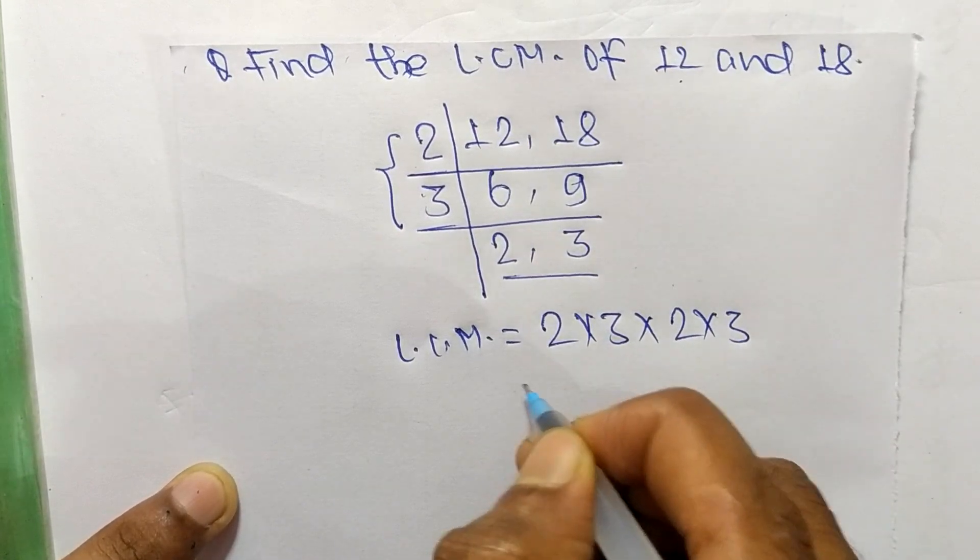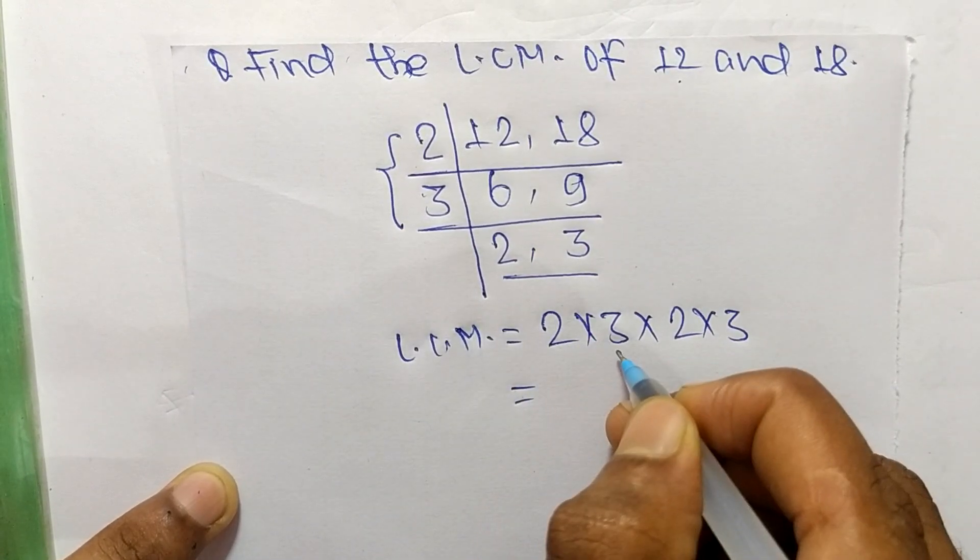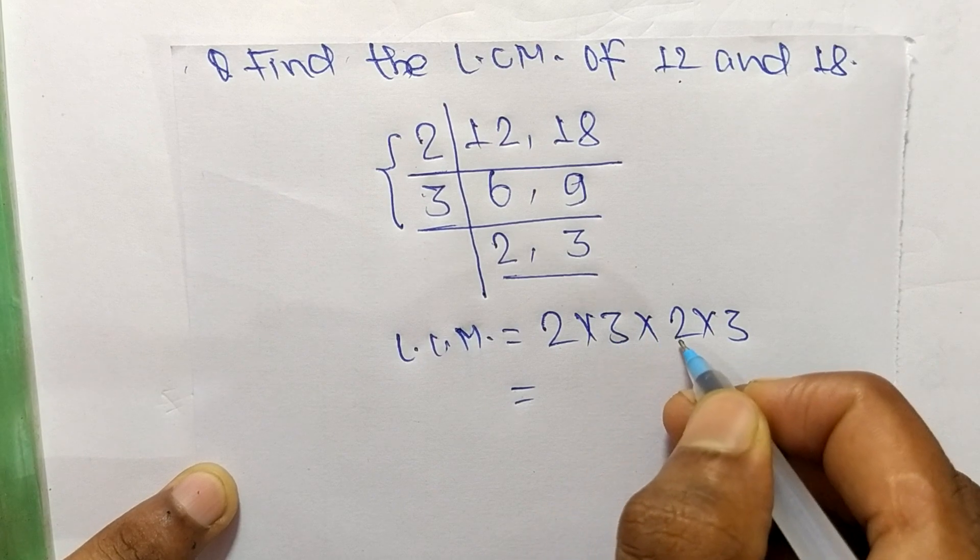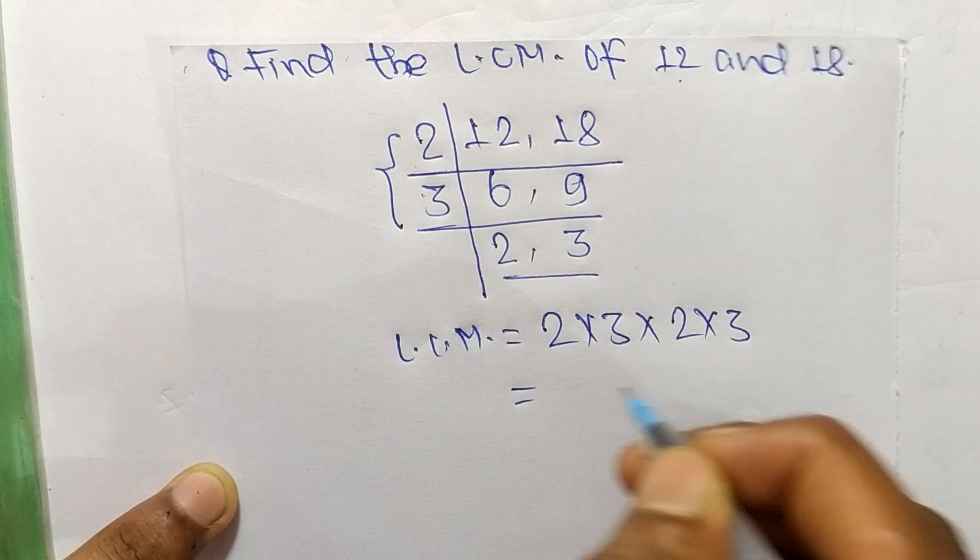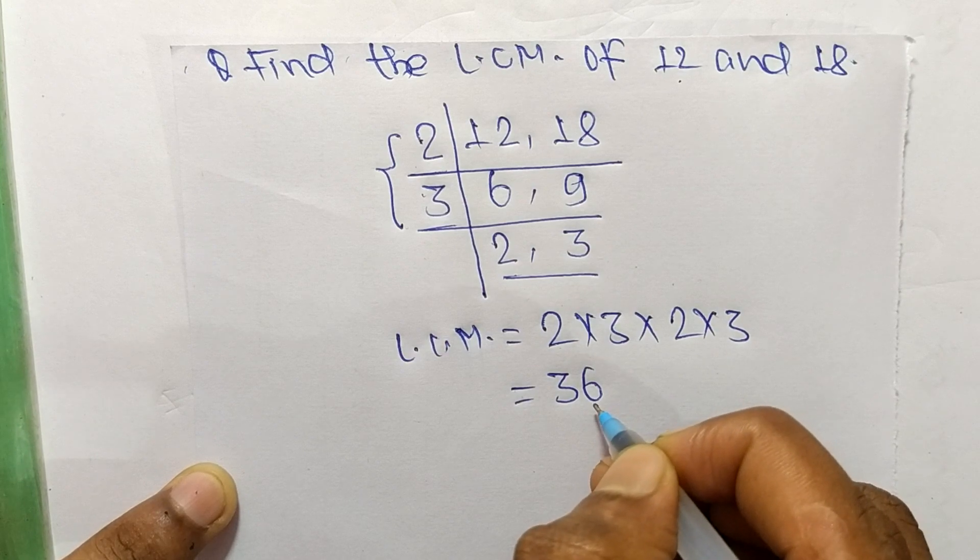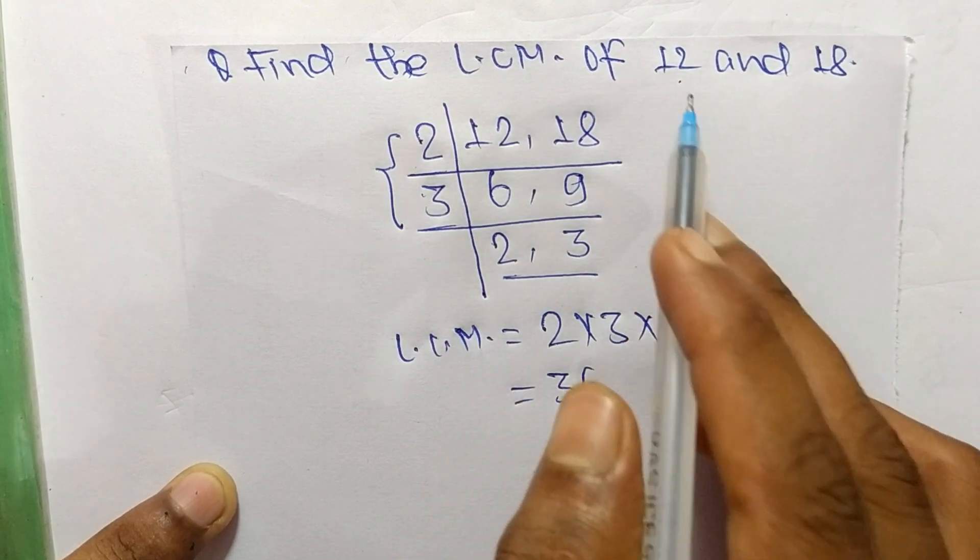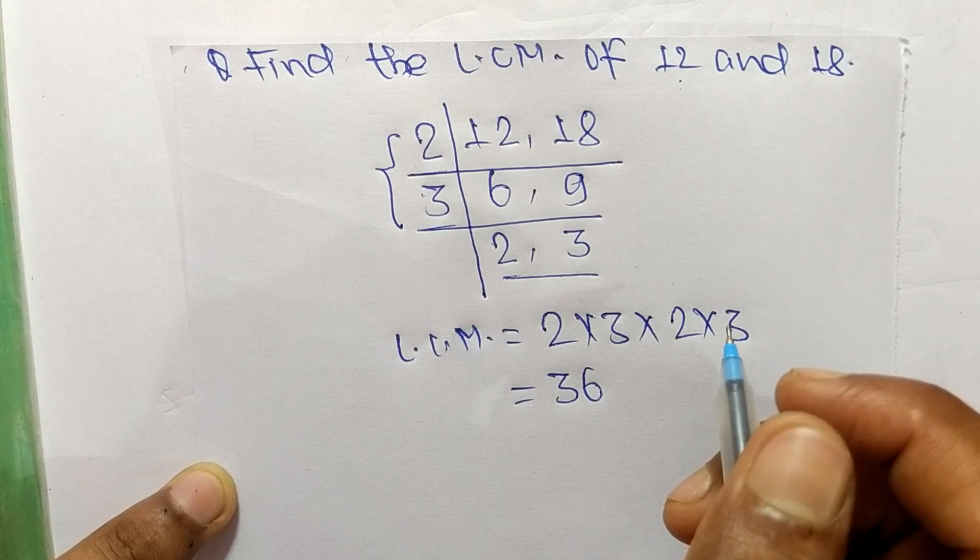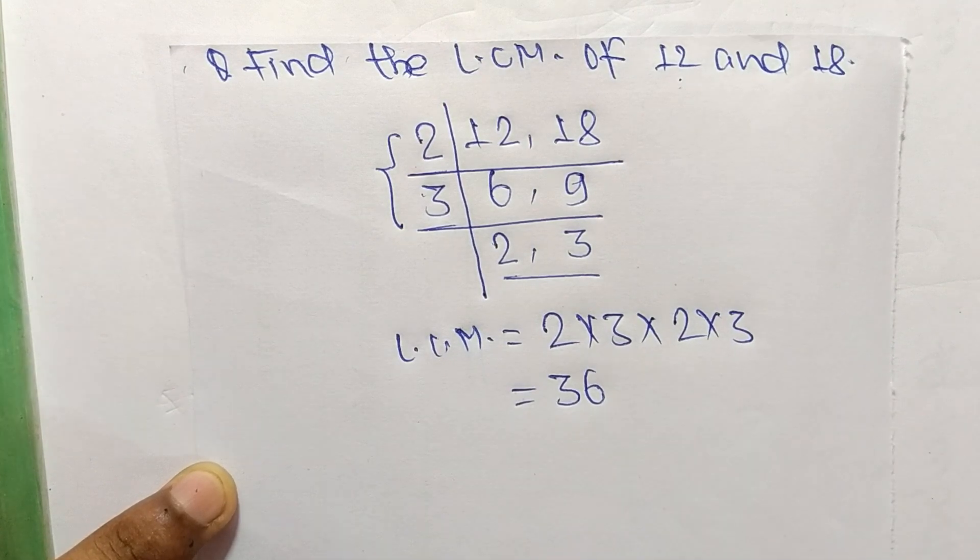So 2 times 3 means 6, 6 times 2 means 12, and 12 times 3 means 36. So 36 is the LCM of 12 and 18. So this is much for today and thanks for watching.